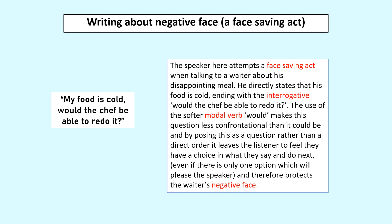Our final example is how to write about a face-saving act, using 'My food is cold — would the chef be able to redo it?' Here's what I would say: the speaker attempts a face-saving act when talking to a waiter about his disappointing meal. He directly states his food is cold, ending with the interrogative 'would the chef be able to redo it?' The use of the softer modal verb 'would' makes this question less confrontational, and by posing it as a question rather than a direct order it leaves the listener feeling they have a choice, protecting the waiter's negative face.